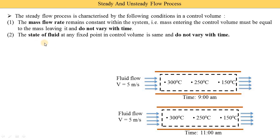The second condition is that the state of the fluid at any fixed point in the control volume is the same and does not vary with time. For example, at a particular point the temperature is 300 at 9 a.m., and when we measure it again at 11 a.m. it is still 300. Similarly, 250 at 9 a.m. is still 250 at 11 a.m. The properties at different states of the fluids do not change with respect to time.